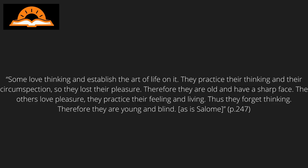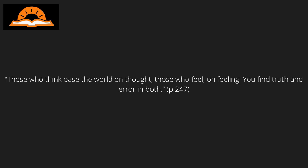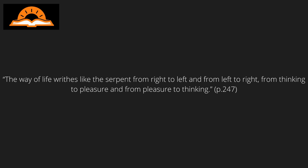Despite needing both principles, Jung observed that one always has a preference for one of them. 'Some love thinking and establish the art of life on it. They practice their thinking and circumspection, so they lose their pleasure. Therefore they are old and have a sharp face. The others love pleasure. They practice their feeling and living. Thus they forget thinking. Therefore they are young and blind.' So Elijah and Salome, who appear incompatible at first, form indeed an extreme contradiction, but also an important union. 'The way of life rides like the serpent from right to left and from left to right, from thinking to pleasure and from pleasure to thinking.' Although the serpent therefore represents this contradiction, it also forms a necessary bridge between these opposing principles. Jung continued with the argument that those who focus too much on thinking lack pleasure — and since these individuals still have feeling, it does not develop and becomes rotten. 'He who prefers to think than to feel leaves his feeling to rot in the darkness.' The same is true for those who focus on feeling — their thinking is left in the dark and starts to rot.